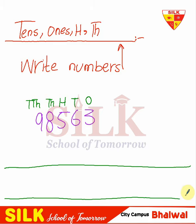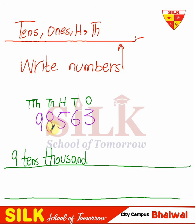Here we start from the left side. We start with 9. What is our 9? It is 9 ten-thousands. What is our value? 9 × 10,000. Then 8 is in the thousands place, so its value is 8,000. We will write in 10,000s and 1,000s.